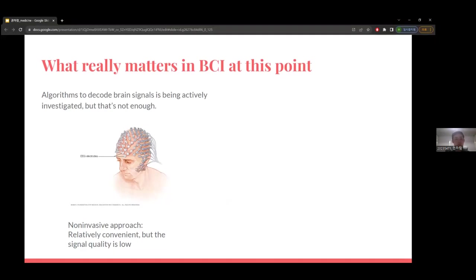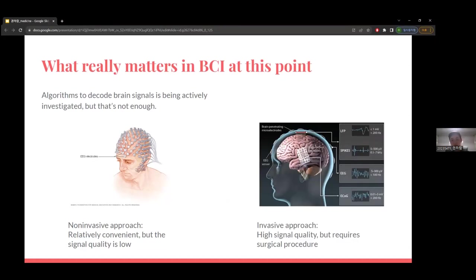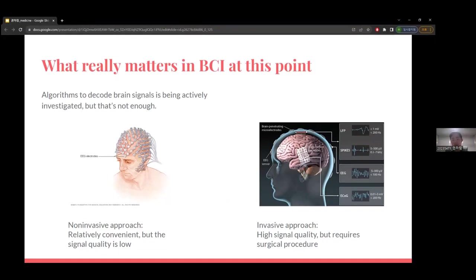What really matters in brain-computer interface now is not just the algorithms, but also the sensors. The first type is non-invasive, where you attach electrodes on the skull. It's relatively convenient, but signal quality is very low because signals must penetrate through skull and skin, getting easily contaminated. Another approach is invasive, requiring surgical procedures to implant a brain chip directly on the brain, providing very high signal quality but requiring surgical incision.